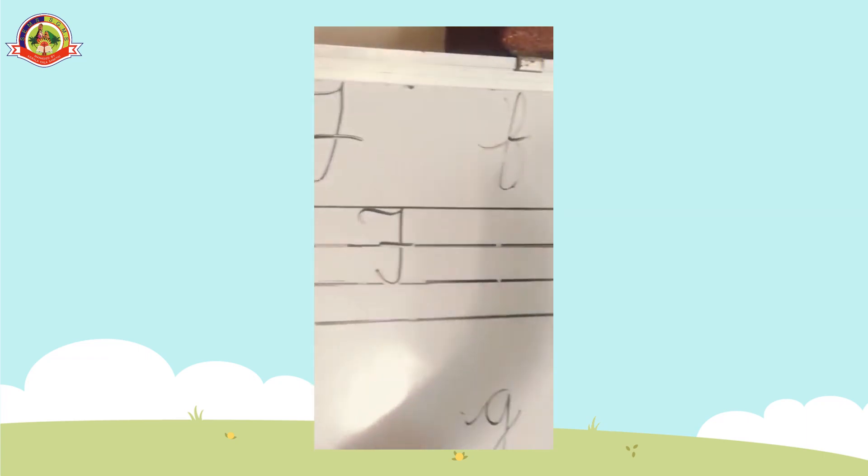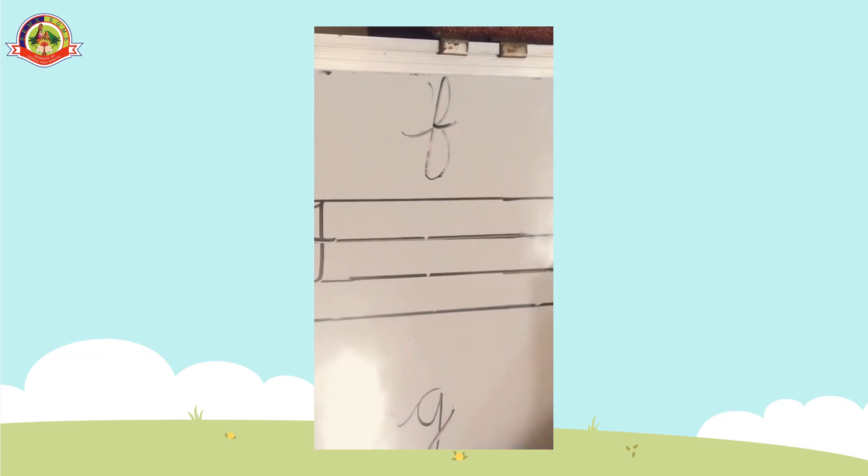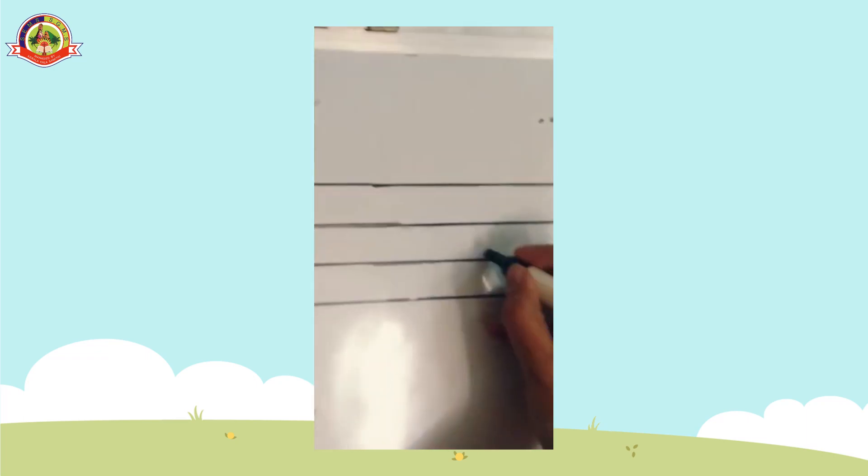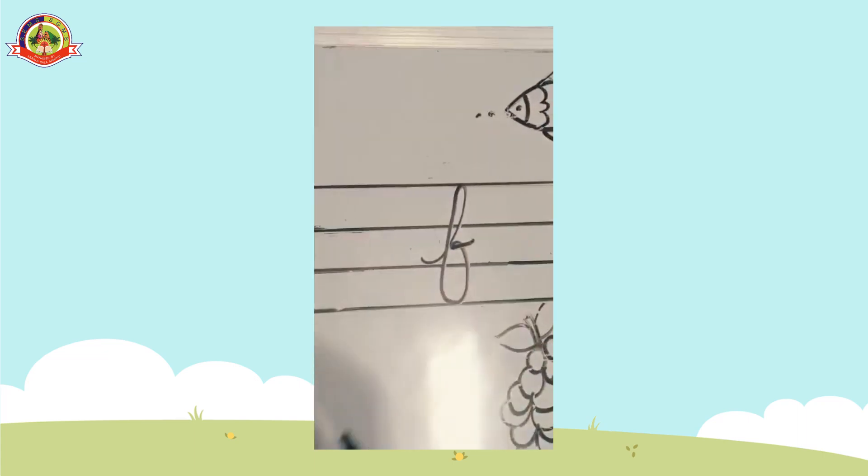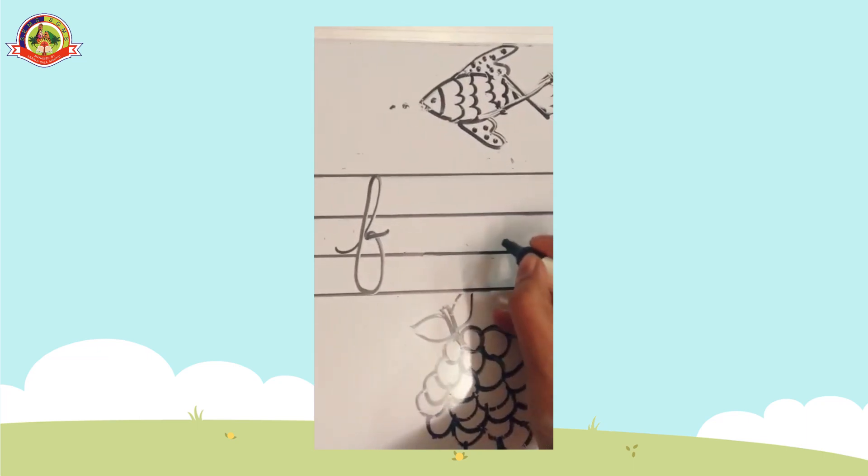Next, small cursive f. Small cursive f. Starting from the third line. The first line. Like this. Once again, I am writing small cursive f.